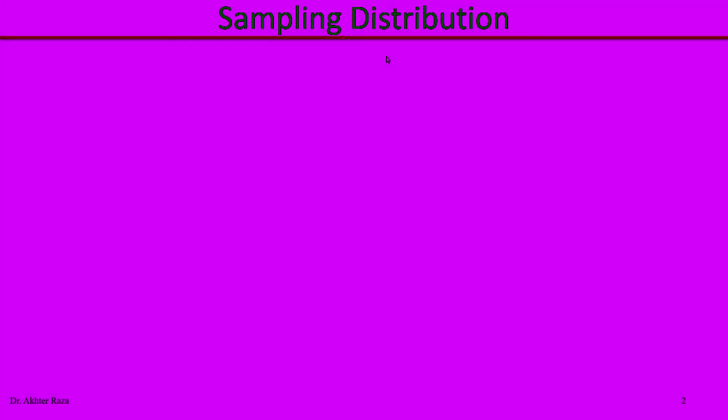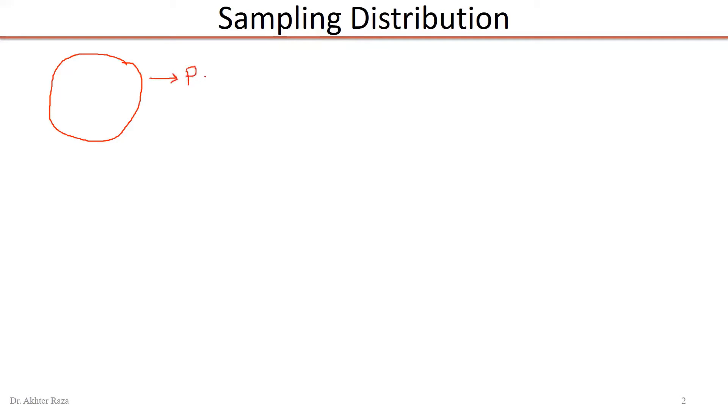To understand the concept of sampling distribution, we are taking one population. Suppose we have a population comprised of certain elements. We are interested in a parameter, which is the characteristic of a population — suppose we are interested in the mean of the population. One way to find the value of this parameter is to conduct a census and get all observations through the census.